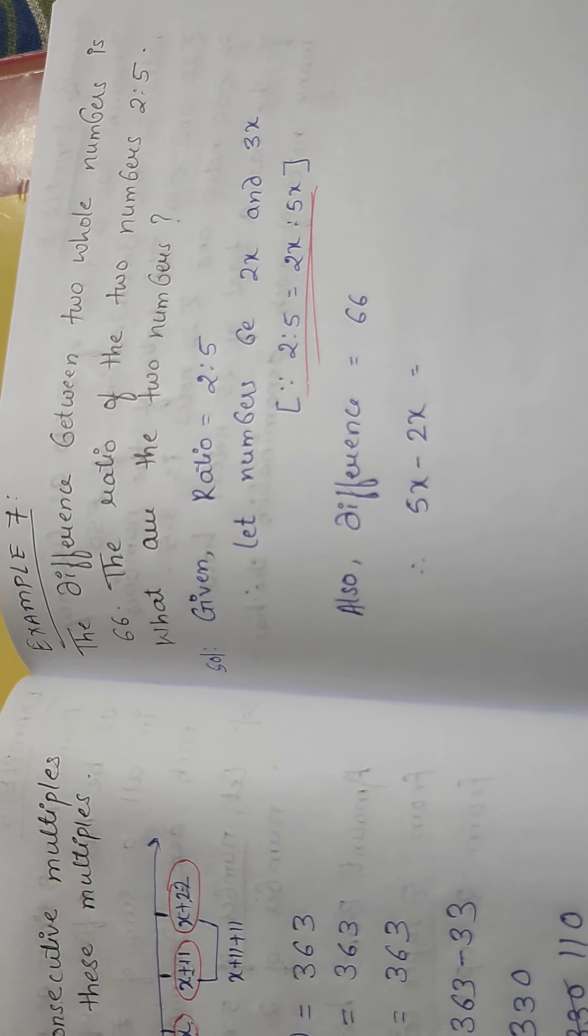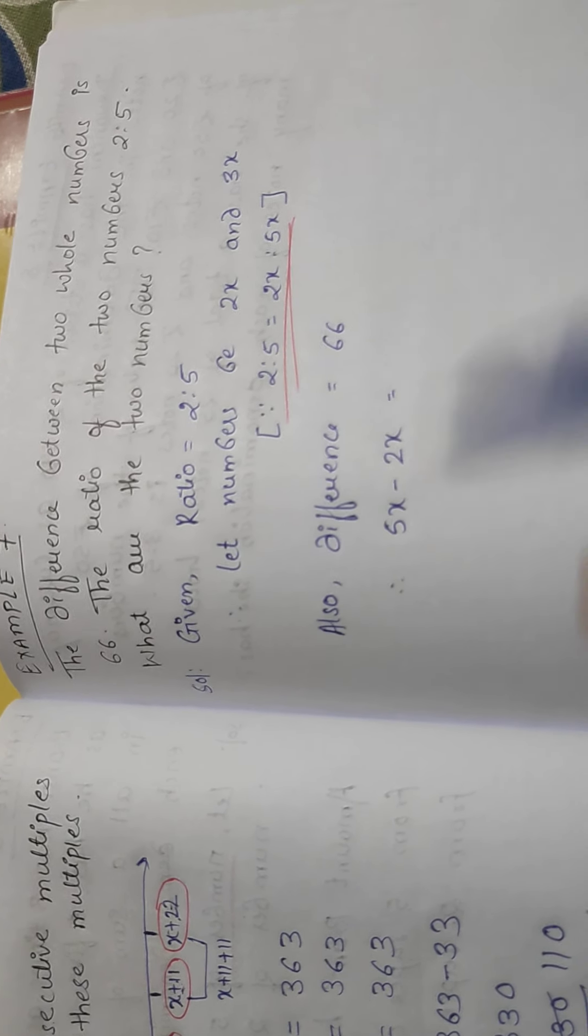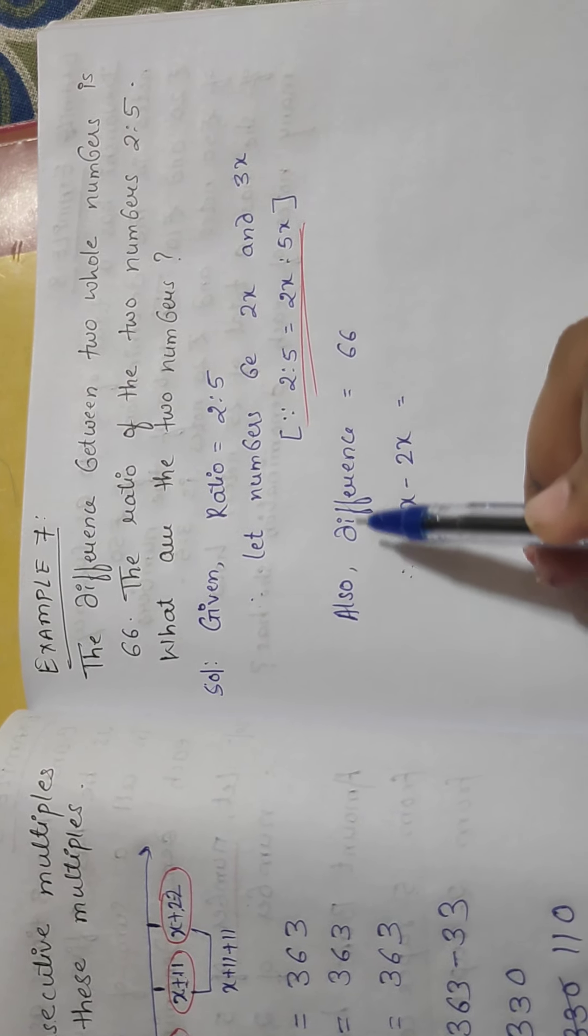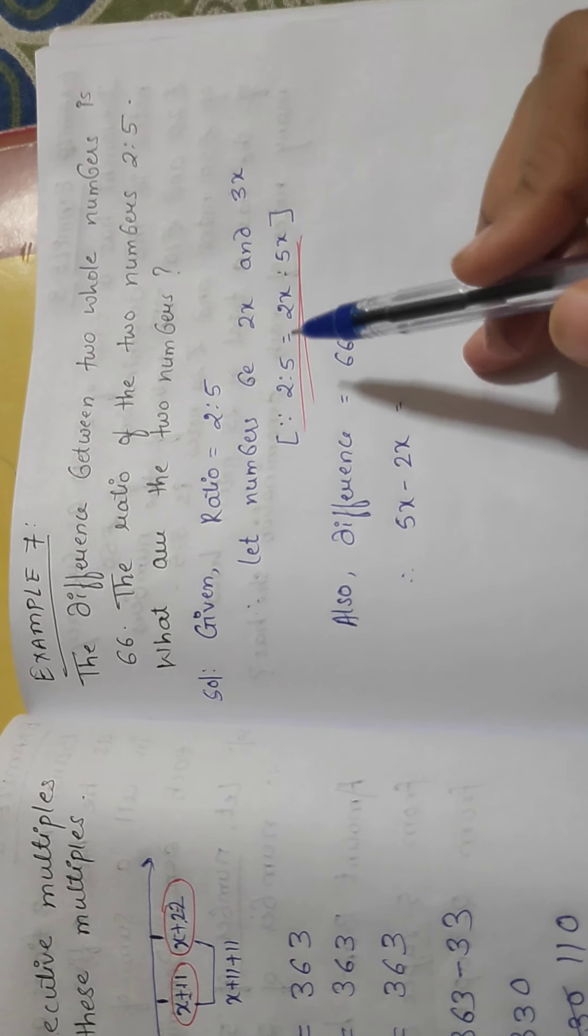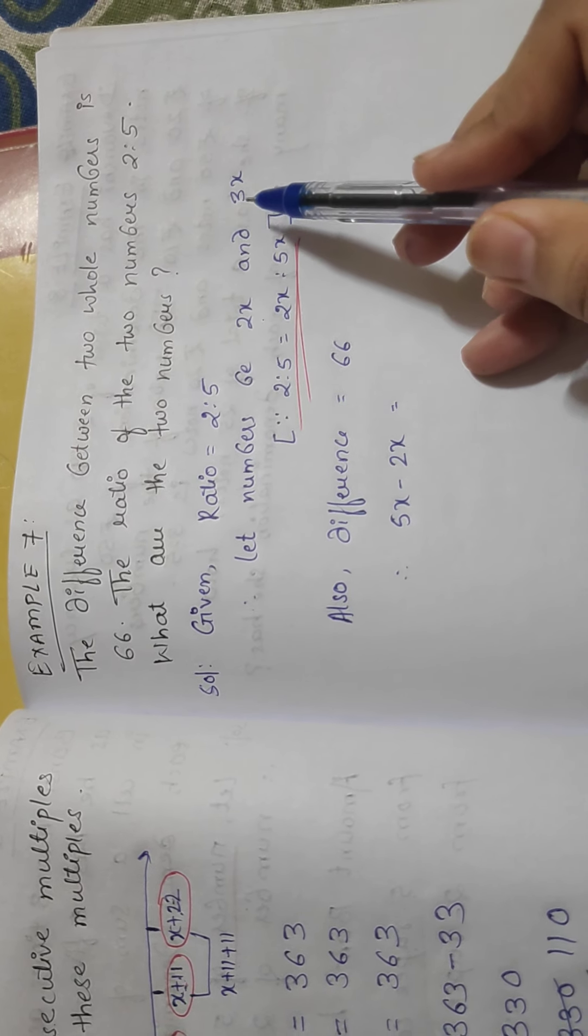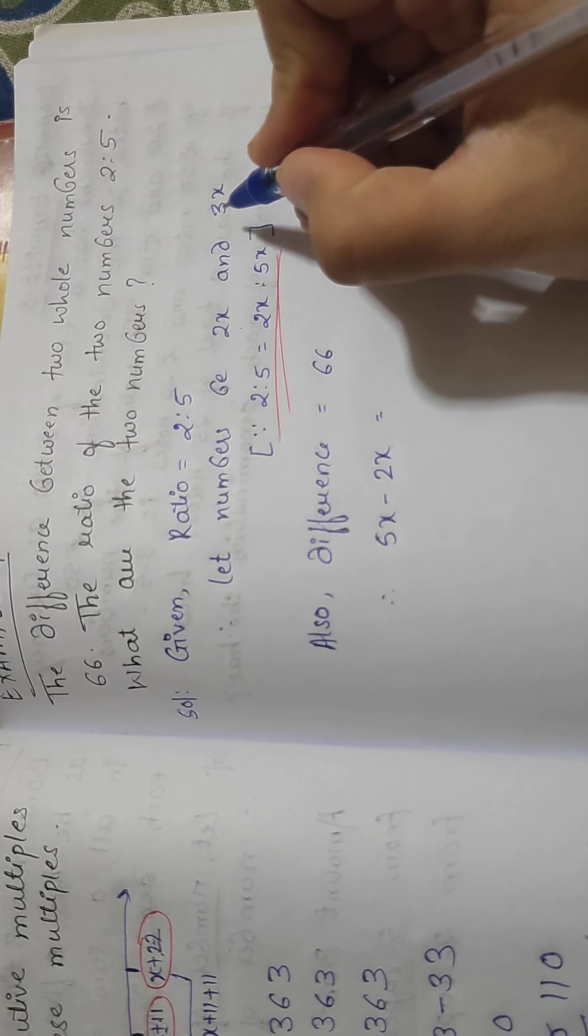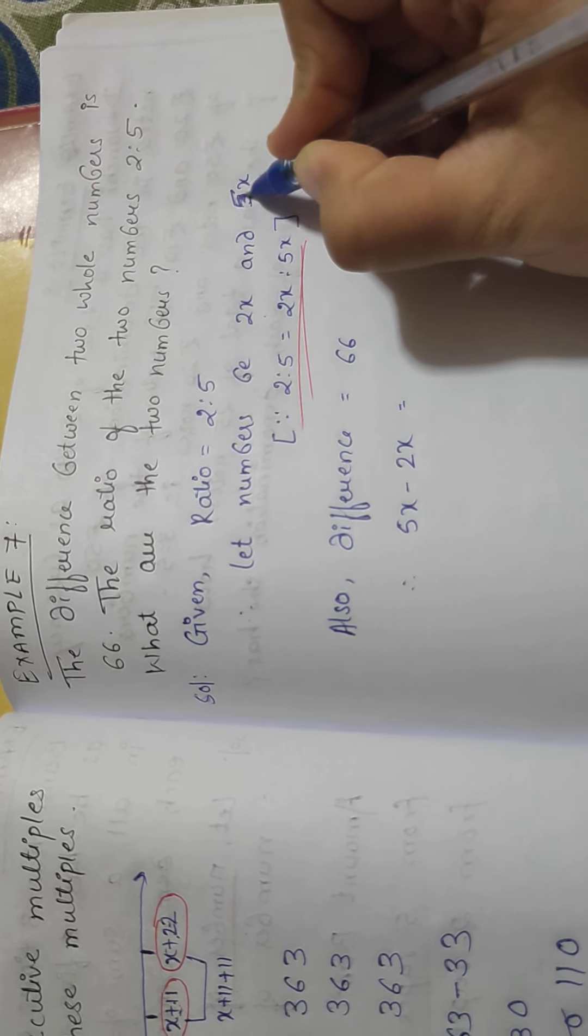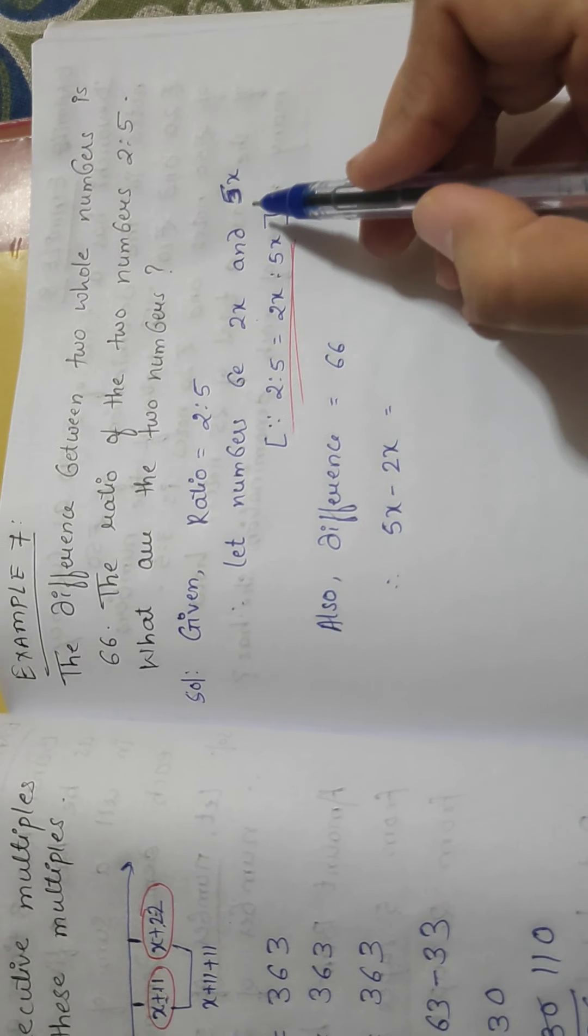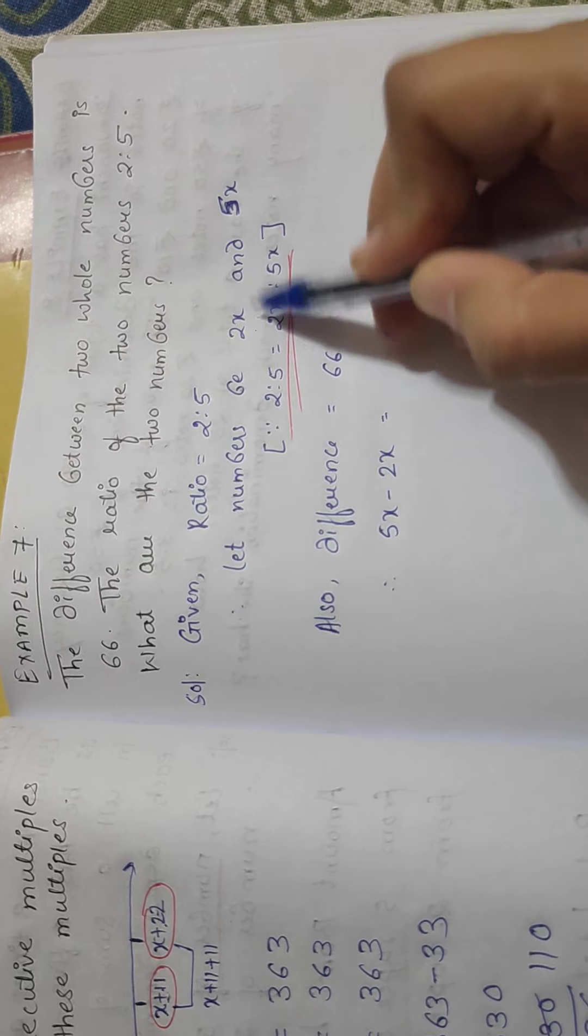Okay, now they have also given difference as 66. Now according to the given condition, here we have taken these numbers as 2x and here it will be, sorry it will be 5x. They have given 2 is to 5, okay, so it will be one number is 2x, another number is 5x.